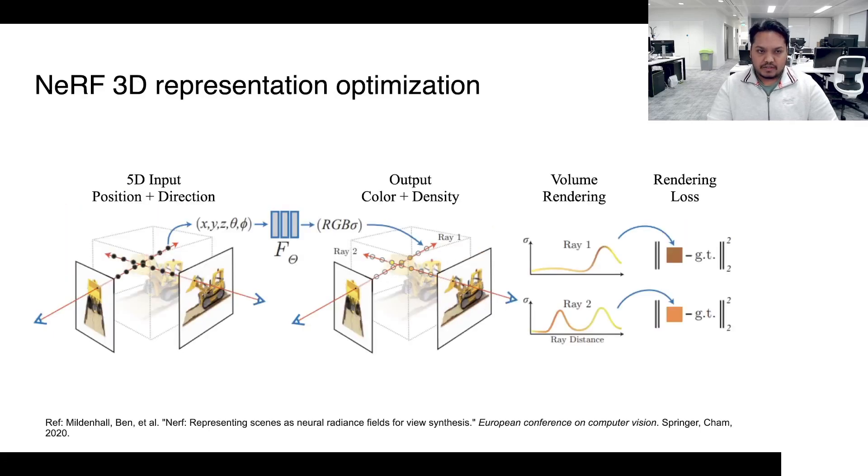The optimization step of NeRF very elegantly plugs two components together. Firstly, an MLP is used for representing the 3D scene volumetrically and secondly, the scene is rendered using physically based volume tracing. With these two components in place, the MLP representation is trained simply by optimizing the MSE, that is mean squared error, between the rendered pixel values and the ground-truth pixel values.